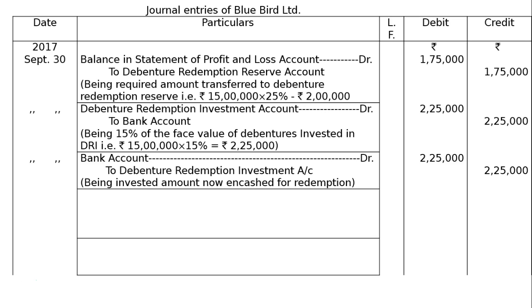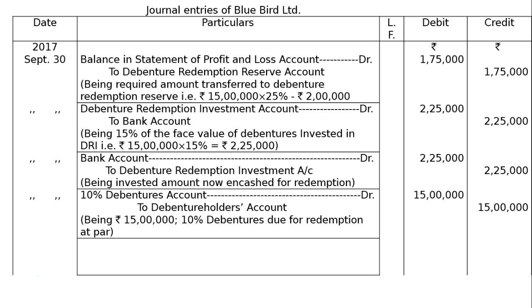Then the due entry for redemption: 10% debenture account debited Rs 15 lakh to debenture holders account Rs 15 lakh, being Rs 15 lakh 10% debentures due for redemption at par.